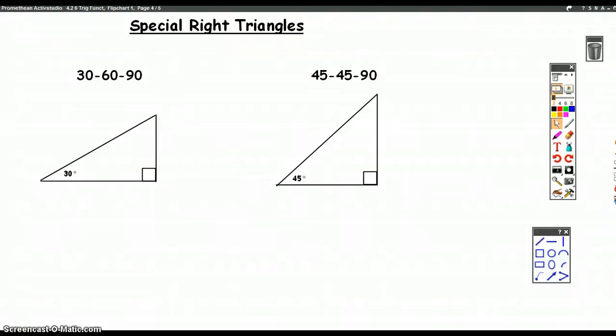All right, we're going to talk about a very important topic for this course, which is our special right triangles. So these are the two. Hopefully you've seen them in Algebra 2 and in Geometry. You've got your 30-60-90 and your 45-45-90.